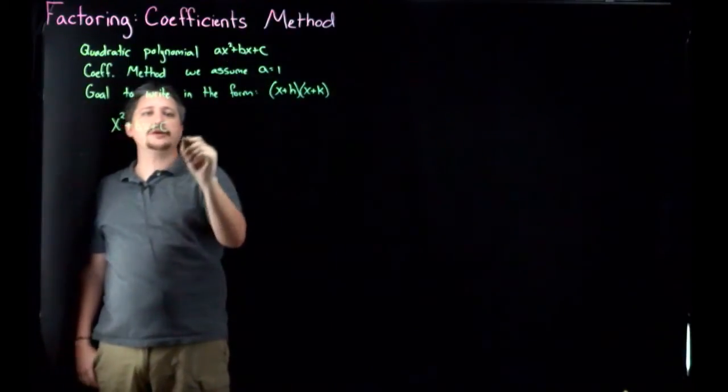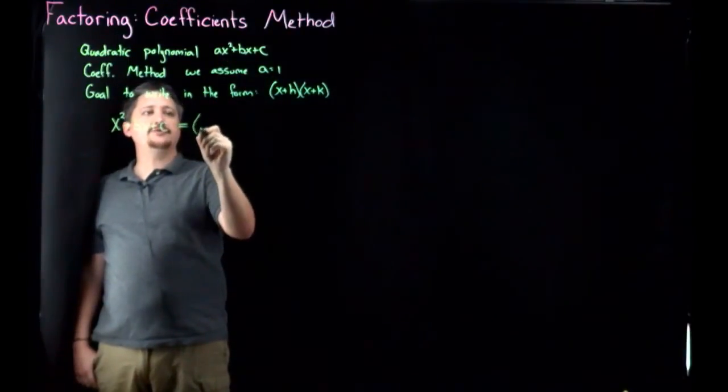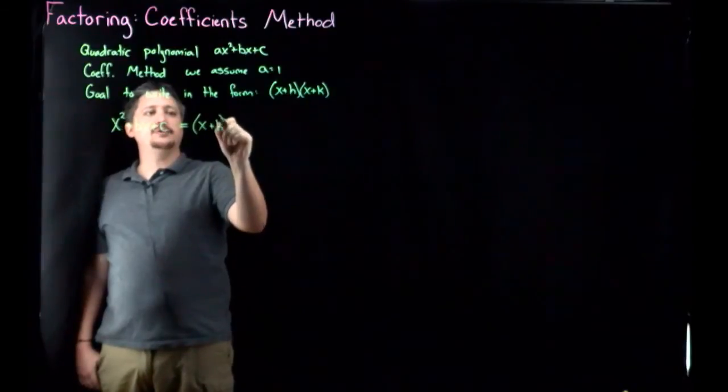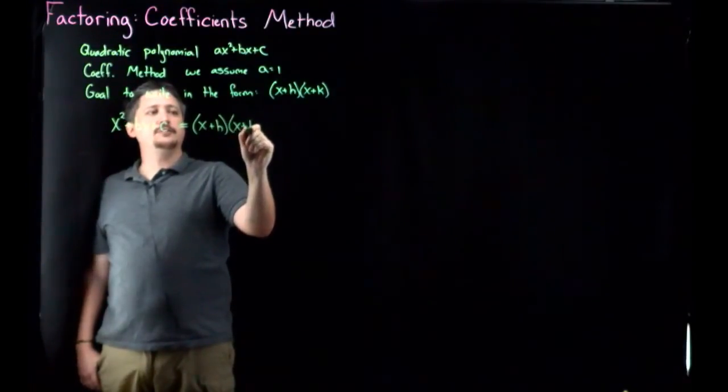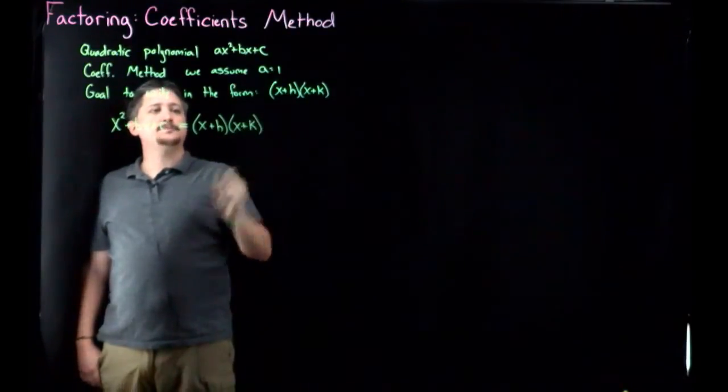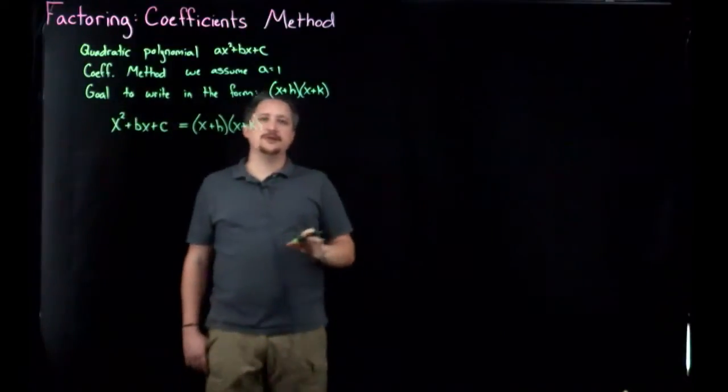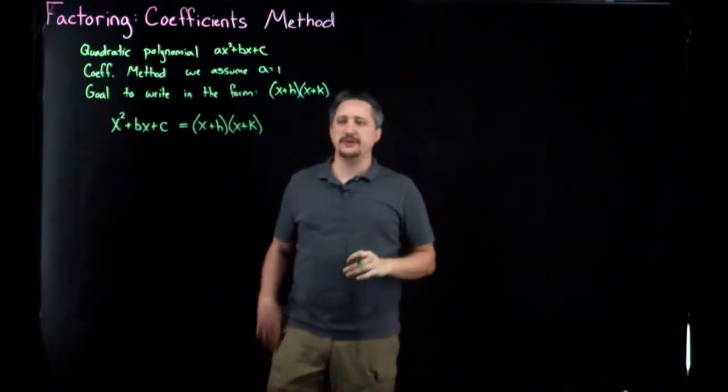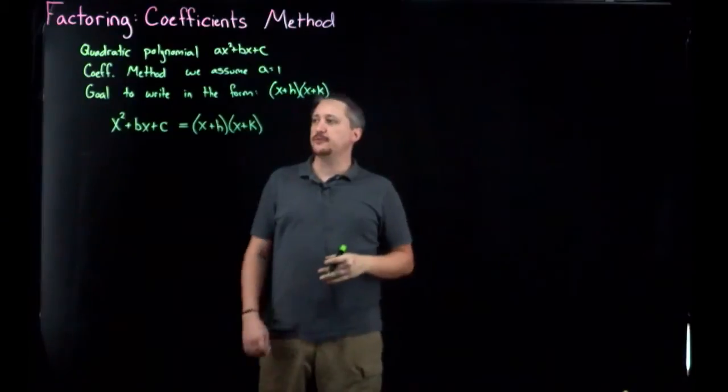Because the leading thing is 1, so I don't have to write it. We want to write it as x plus a number times x plus a number. I realize lots of letters, bear with me. We'll go through the algorithm and concrete versions in a moment.